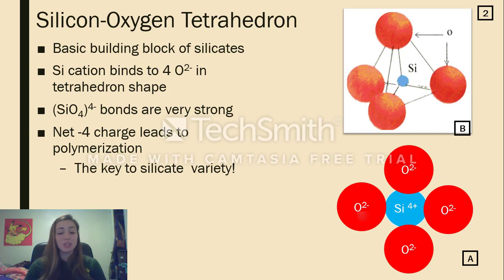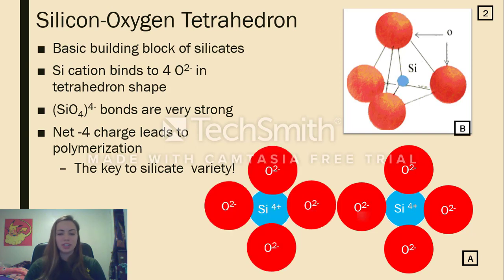This is because the tetrahedron wants to balance out to zero rather than that negative 4 charge. Polymerization occurs when one tetrahedron binds to another tetrahedron via those oxygen atoms. You may have noticed on the other slide how different each mineral group looked. This is all due to polymerization.